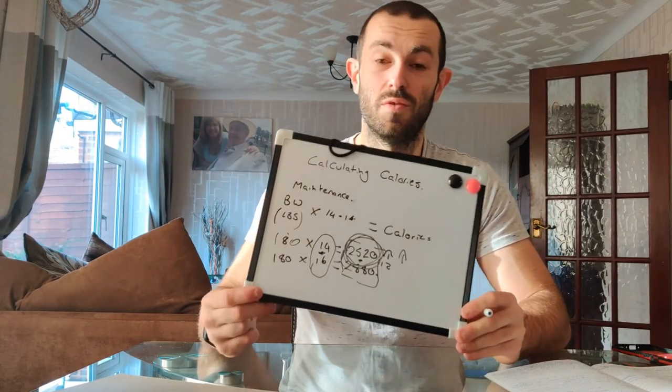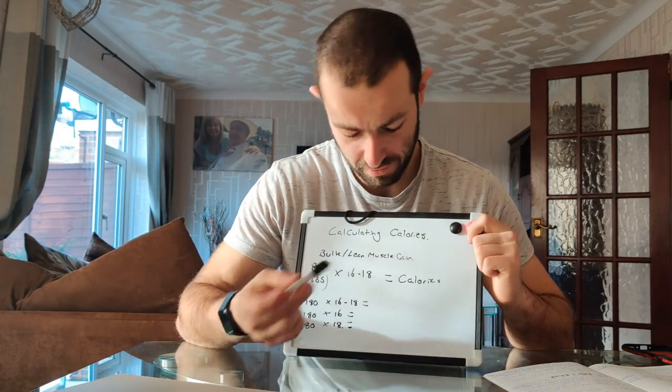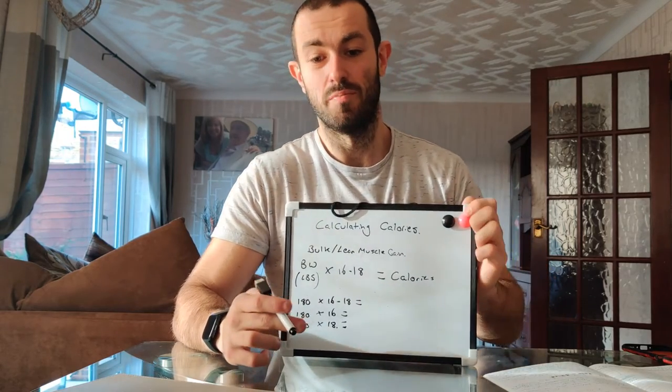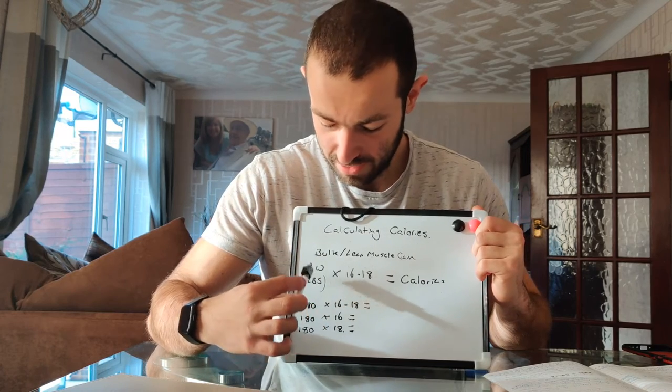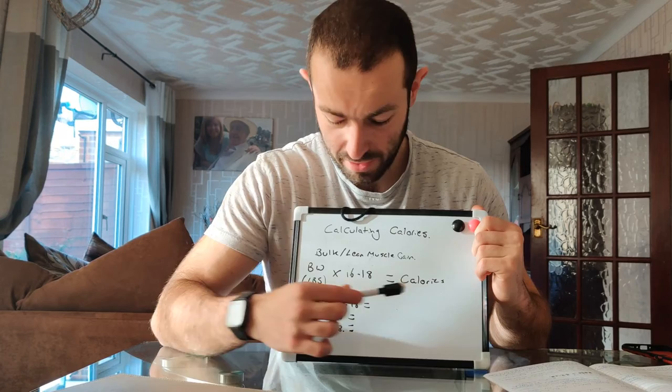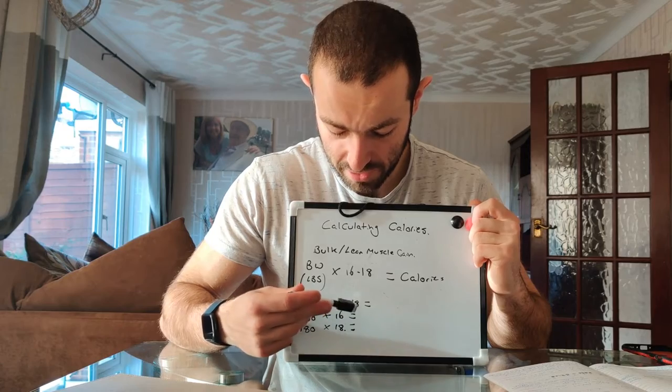Next we're going to jump into starting a steady bulk and gaining some lean muscle. The calculations for a lean gaining phase use body weight times 16 to 18, and that gives you your calories. For a 180 pound person, times 16 to 18 gives you a range of 2,880 to 3,240 calories — which is a substantial amount for a lean massing phase.